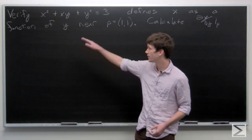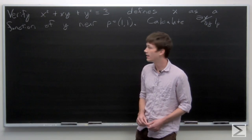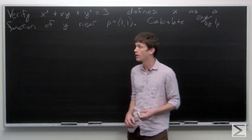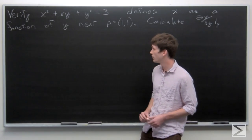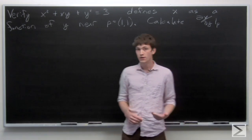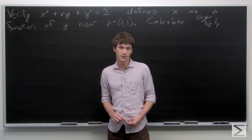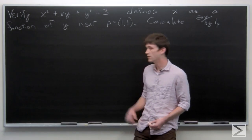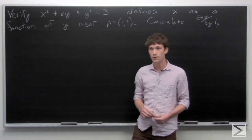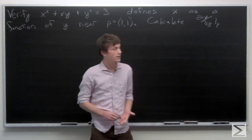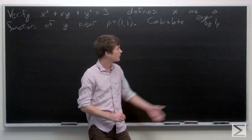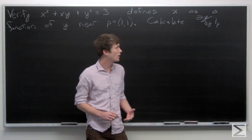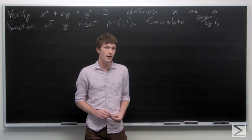In this problem, we're asked to verify that x squared plus xy plus y squared equals 3 defines x as a function of y near the point p equals (1, 1). And then we're asked to calculate the partial derivative of x with respect to y at p.